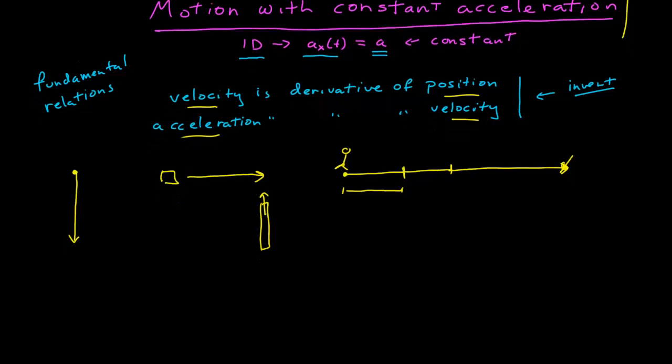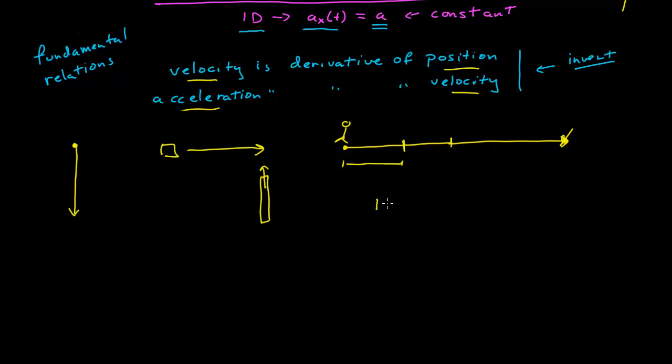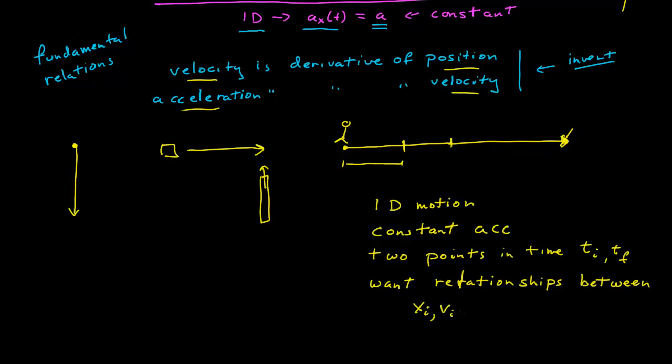And so there's this entire class of problems that satisfy these specific conditions where we have 1D motion, we have constant acceleration, and we have two points in time, which I'll call t_initial and t_final. And what we want is we want to find relationships between initial position, initial velocity, and initial time, and final position, final velocity, and final time.